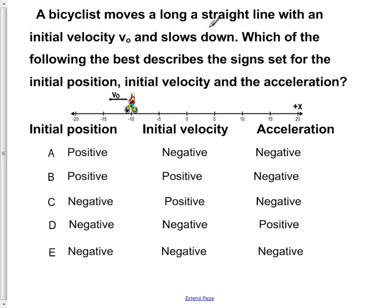If we take notice of the wording here, we know that we're moving with an initial velocity, v-naught, and we're slowing down. Now we want to find the signs that go for each: the initial position, velocity, and acceleration of the object. So the first step is to find, depend upon the initial position.